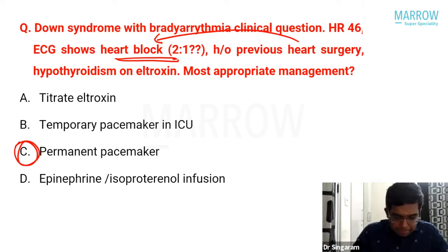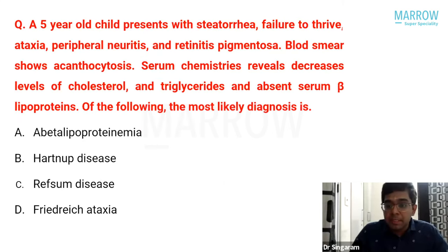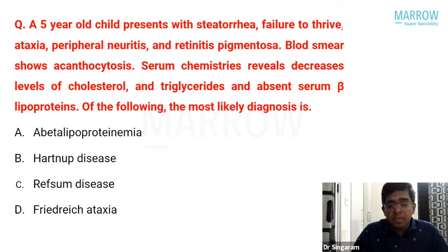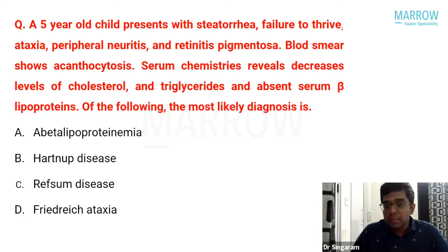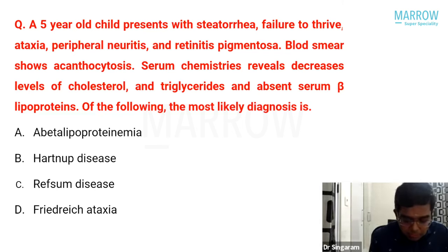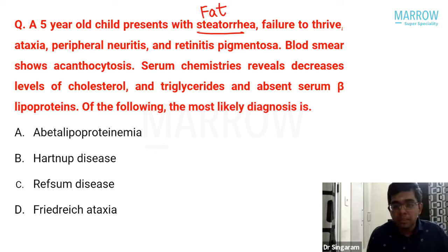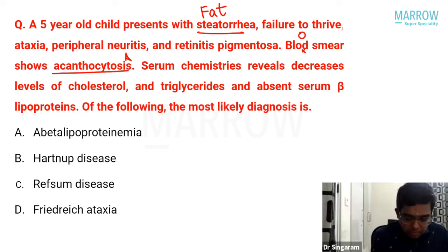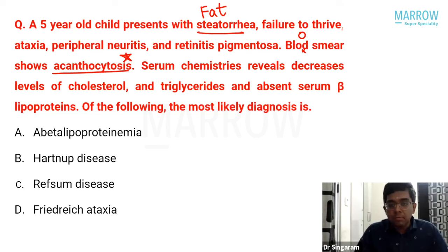A five-year-old with steatorrhea, failure to thrive, ataxia, peripheral neuritis, and retinitis pigmentosa. Blood smear showed acanthocytosis, and serum chemistry revealed decreased cholesterol, decreased triglycerides, and absent serum beta-lipoprotein. Key clues are steatorrhea, acanthocytosis, and very low lipid levels. The answer is abetalipoproteinemia — Friedreich ataxia, Refsum disease, and Hartnup disease can all be ruled out based on the specific findings.